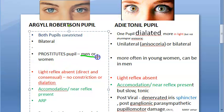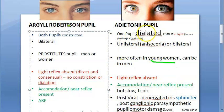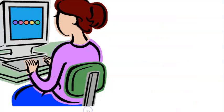Argyle Robertson pupil is called 'prostitute's pupil,' but it can affect both men and women. Adie's tonic pupil is more often seen in young women, but it can also occur in men.